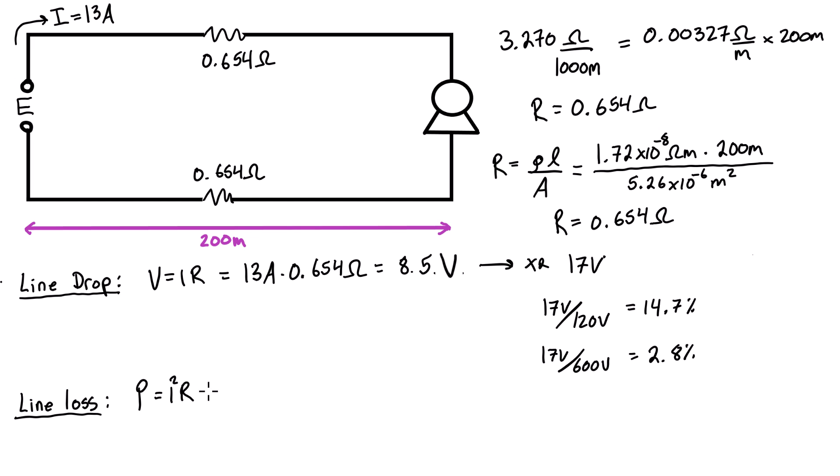We can just plug in the values that we have. We have the current, it is 13 amps, we're going to square that, and we're going to multiply it by the resistance. I'll just do one line each—you could do the whole circuit at once if you want. So we have 0.654 ohms, and we're going to get a value of 110.5 watts in each line, or we can multiply that by two for the entire circuit and we're going to get 221 watts for the entire circuit. So that answers the question: the line drop is 17 volts for the whole circuit and the line loss is 221 watts for the whole circuit.